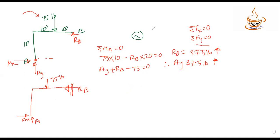Taking summation of moment at A equals zero. We have 75 acting clockwise and RB acting counterclockwise. Negative 75 times 10 plus RB times the distance. The distance from A to B is 20 inches, so RB times 20. This gives RB equals 62.5 pounds.